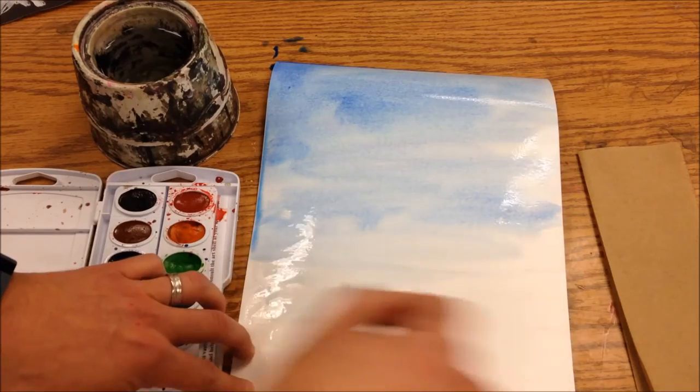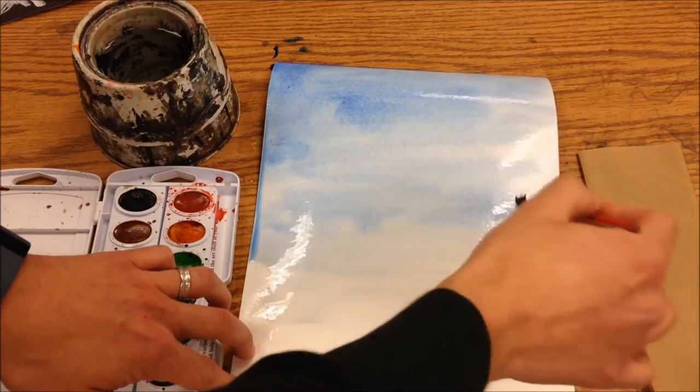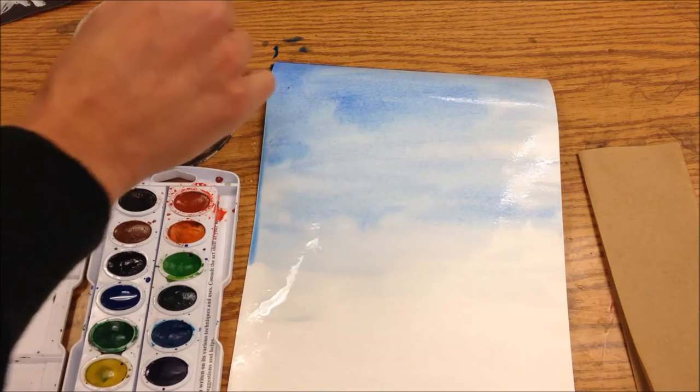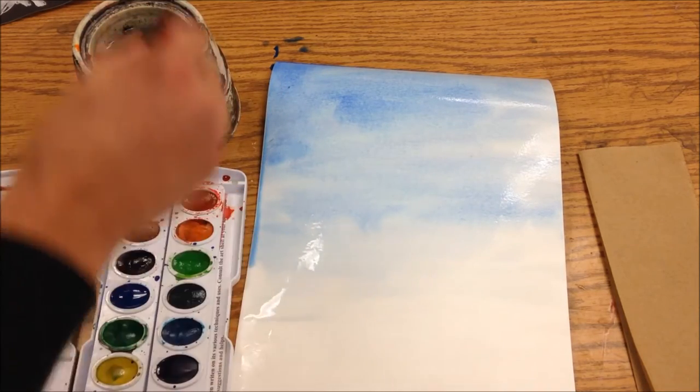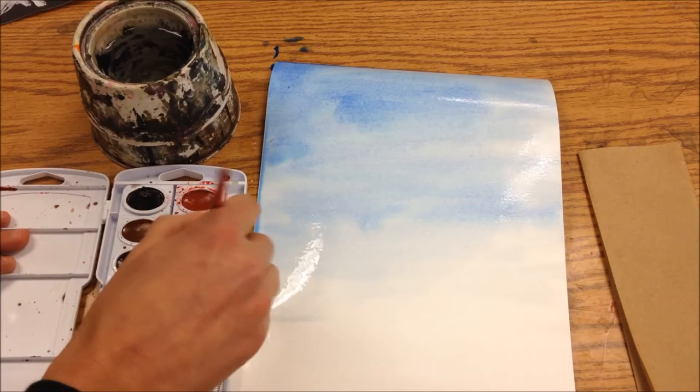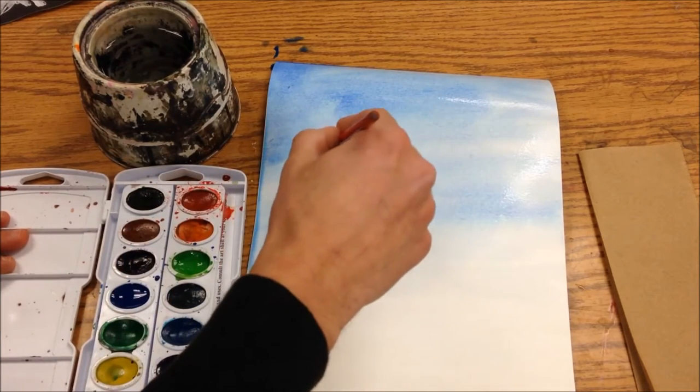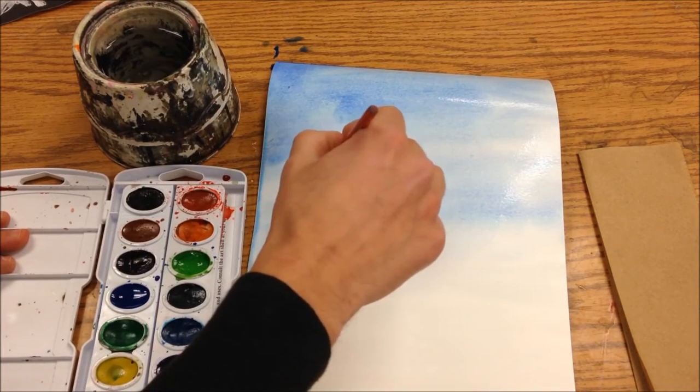And then if you want to add some of those northern lights in there, you can go in and pick out a color that you think might be nice and it's nice to just do this wet on wet technique.